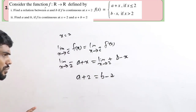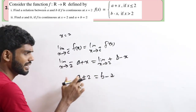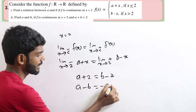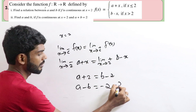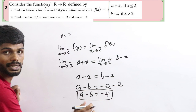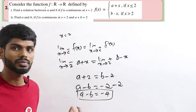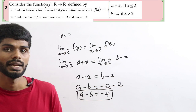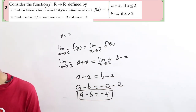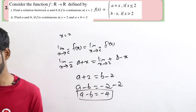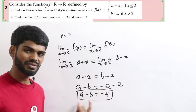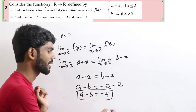Since a plus 2 equals b minus 2, this creates the relation a minus b equals minus 4. So the relationship between a and b is: a minus b equal to minus 4. This is question 1's answer — if f of x is continuous at x equal to 2, then a minus b equals minus 4.